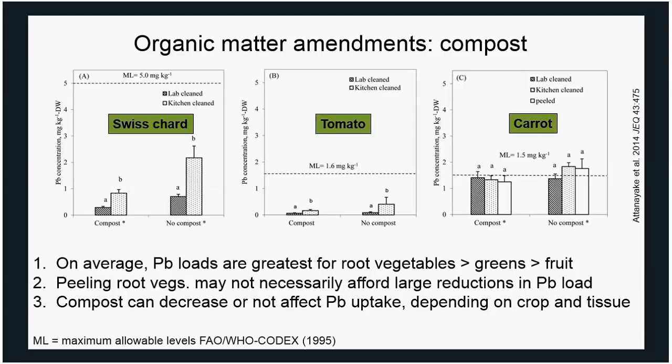Some people suggest that peeling root vegetables might be effective as a way to decrease the amount of lead bound to the surface. It seems like this can be done, but under realistic kitchen conditions - not in a lab - the contribution of washing and peeling to decreasing the lead load in a root crop is not that marked. So really, avoidance of root crops is probably the better approach to follow.